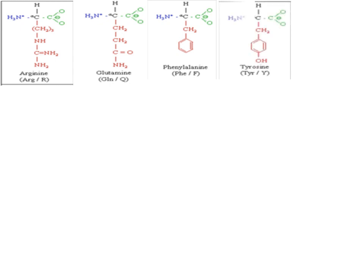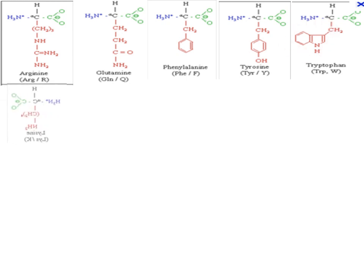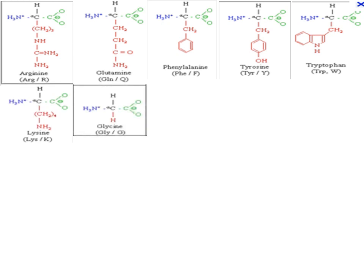The fourth amino acid is tyrosine, where the R group is also an aromatic compound. The fifth is tryptophan, which also has an aromatic compound as the R group. Then comes lysine. This is glycine, where the alkyl group is represented just by a hydrogen atom, and alanine, where the R group is a methyl group.